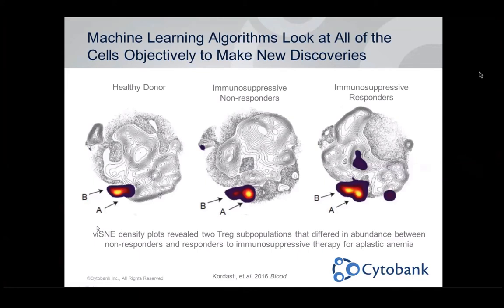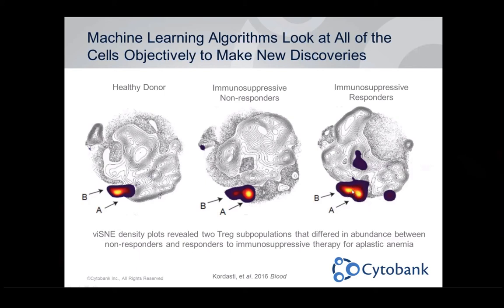Here's an example: Sharam Kordasti at King's College London published this paper in Blood. They looked at a Visne plot where gray events are total CD4 cells and colored events are T-regs. For healthy patients, T-regs have one phenotype and are in one region of the Visne plot. Immunosuppressive non-responders had T-regs that looked more like a different phenotype in a different position. People who responded to therapy had more of a healthy phenotype. The difference between these two subsets of T-regs is very small but spread across several channels — difficult to find manually.